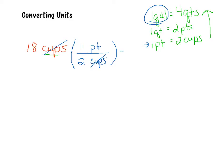So, in multiplying this, I have 18 cups, or 18 times one, which is 18, and then I need to divide by the two. So, basically, I'm going to be left with nine pints of milk.